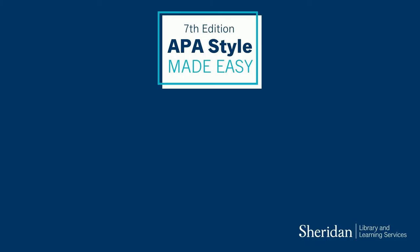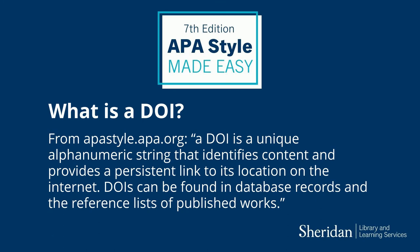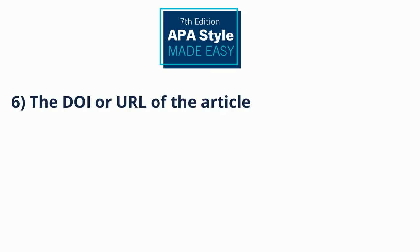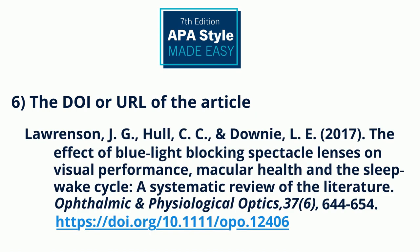The last step in creating your citation is to add the DOI or permanent link to the article. APA Style prefers that you use a DOI when it's available. A DOI is a unique alphanumeric string that identifies content and provides a persistent link to its location on the internet. DOIs can be found in database records and in the reference lists of published works — you can usually find the DOI in the publication information. We'll add the DOI after the page numbers like this. If the article does not have an assigned DOI, you may use the URL or permanent link instead.